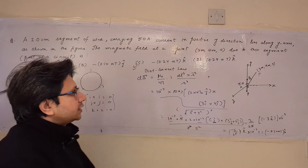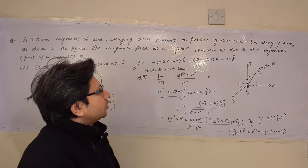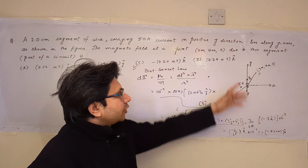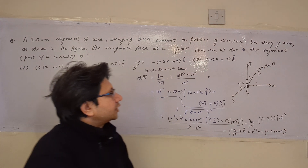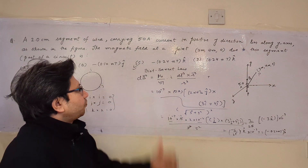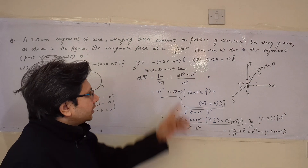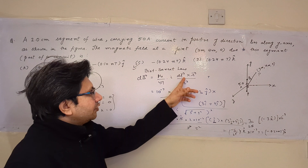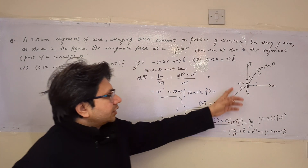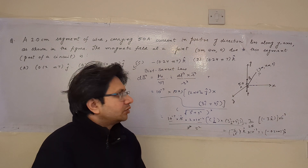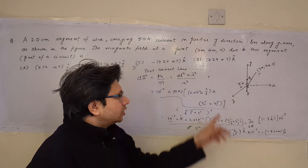To recap: the current segment is a 2 centimeter length of wire placed along the positive y direction with a current of 5 ampere. We want the magnetic field at the point (3 meter, 4 meter, 0). Using Biot-Savart law, dB = μ₀/4π · I dl × r / r³. With μ₀/4π = 10⁻⁷ and I = 5 ampere, the dl vector is 2×10⁻² ĵ. The r vector (position vector of the point) is 3î + 4ĵ.